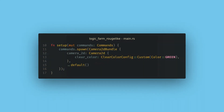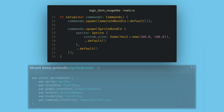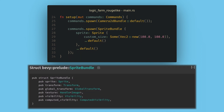If we want to change the clear color, we can modify it on the bundle before we spawn the camera. Next, let's add a sprite to our game. In the same setup function, we're going to spawn a SpriteBundle. This bundle has a sprite, the transforms, visibility controllers, and a handle for the image to use.